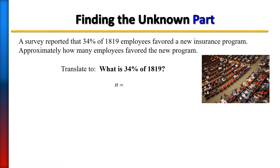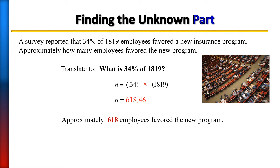Remember, when you see 'of' that means multiplication, and then you have your number. So all we need to do is multiply 0.34 times 1,819 on your calculator, and you should get 618.46. Since we're talking about people, we round to the nearest whole number, so approximately 618 employees favored the new program.